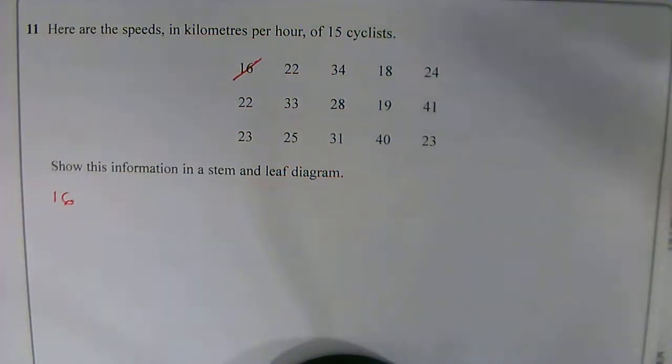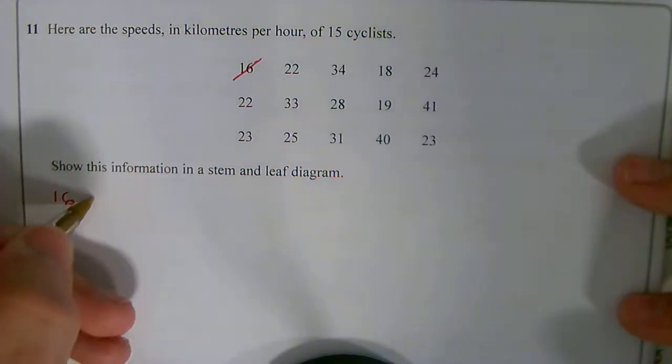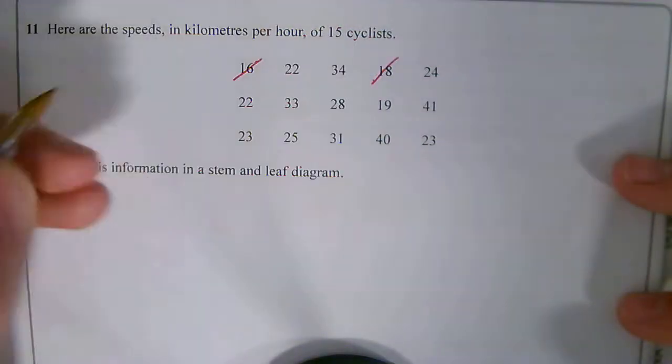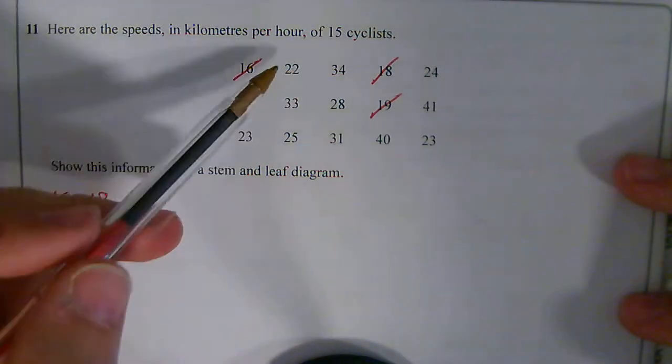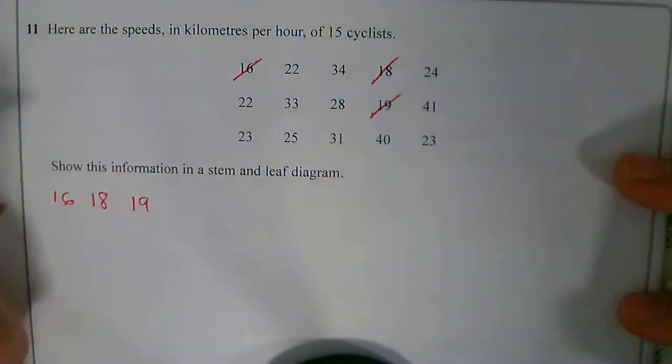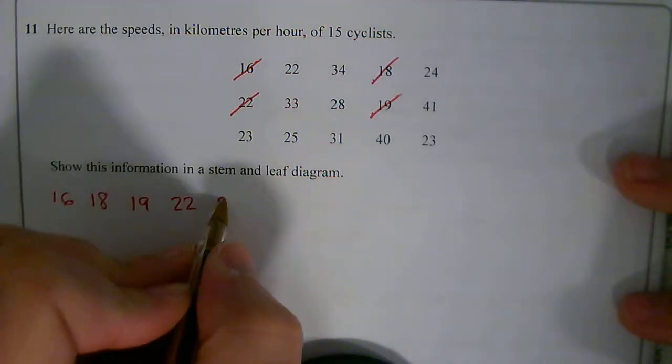And I'm going to cross them off as I go along. The next lowest number is 18. Then I've got 19. After that, I've got 22, and I've got that a couple of times.